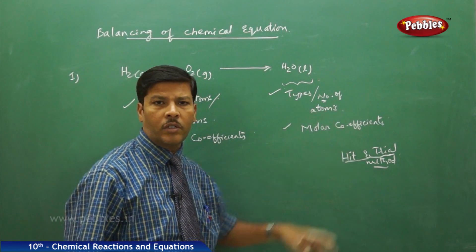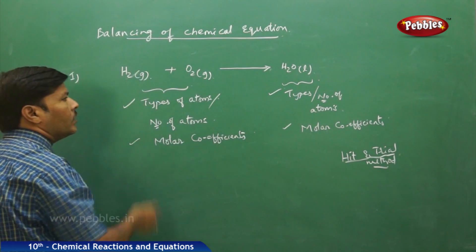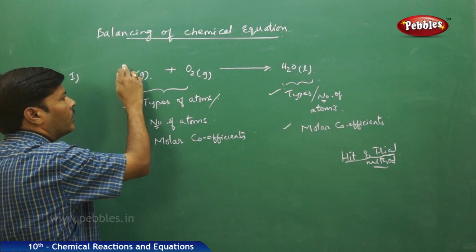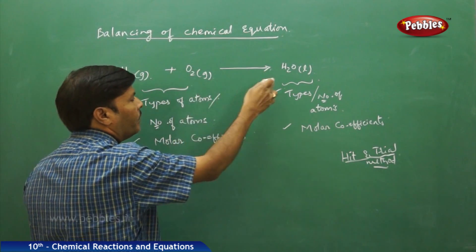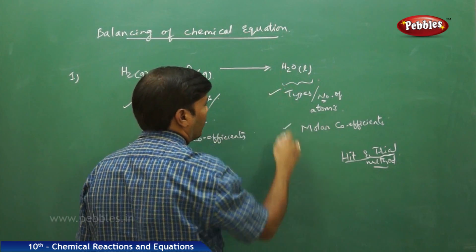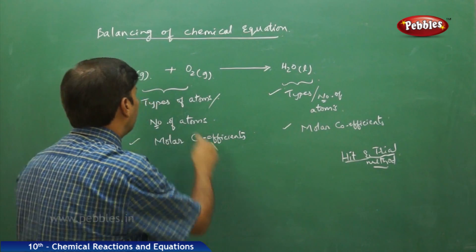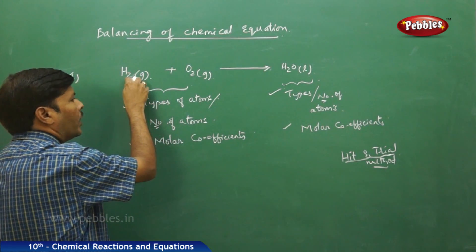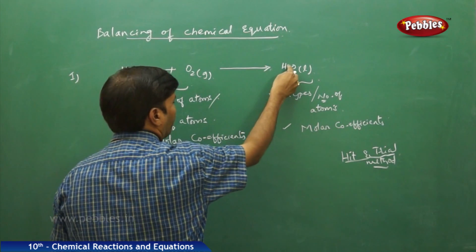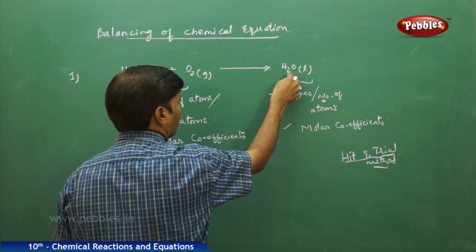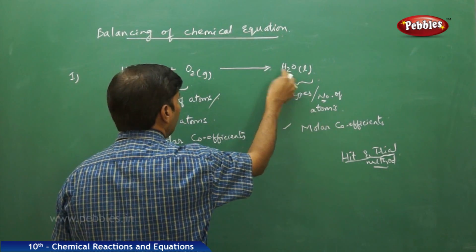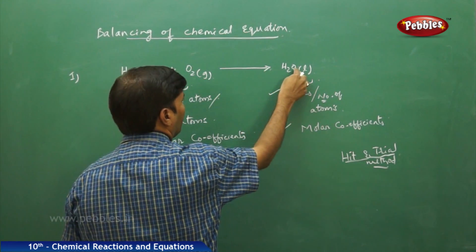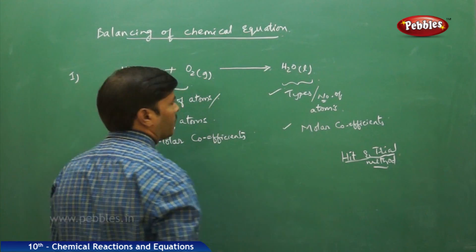The hit and trial method is simply the adjustment of the molar coefficients of the reactant molecules and the product molecules by checking the status of the number of atoms or molecules on the reactant side and number of atoms and molecules on the product side. In this reaction, on the reactant side we have one hydrogen molecule and one oxygen molecule. On the product side, we have one water molecule. On the reactant side, we have two hydrogen atoms (H₂). On the product side, we also have two hydrogen atoms. On the reactant side we have two oxygen atoms, but on the product side we have only one oxygen atom.